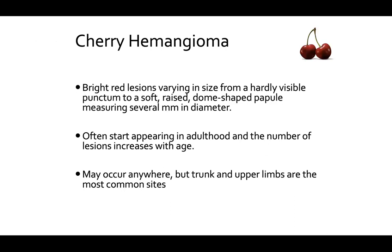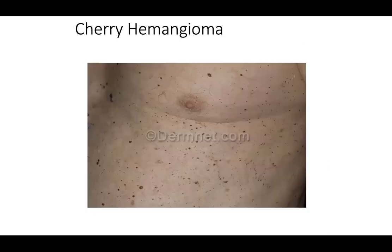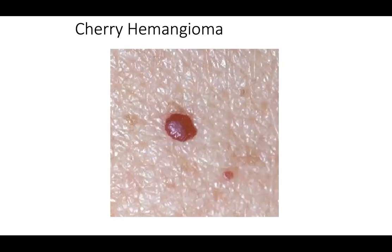We'll start with probably the most common vascular neoplasm you will see in the clinic: cherry hemangiomas. They are bright red lesions varying in size from a hardly visible punctum to a soft raised dome-shaped papule measuring several millimeters in diameter. They often start appearing in adulthood and the number of lesions increases with age. They may occur anywhere, but the trunk and upper limbs are the most common sites. Here's a clinical example showing their symmetric and well-circumscribed nature.